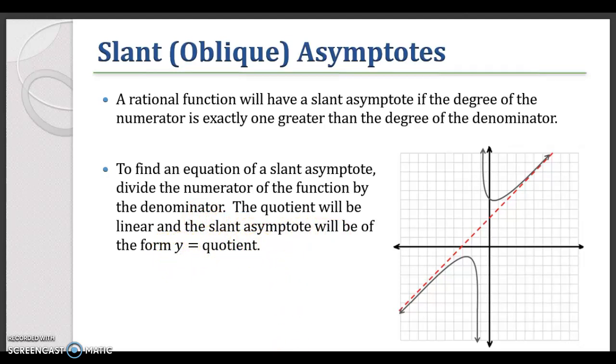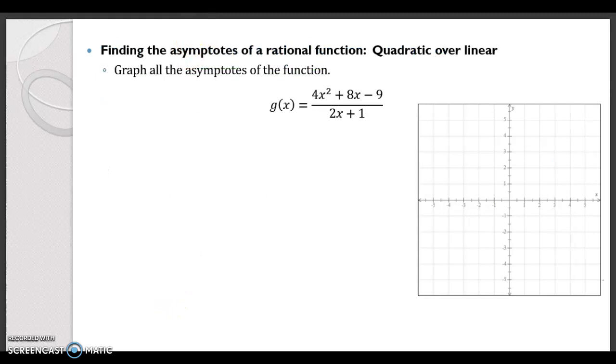So let's go ahead and do this example. So first, let's go ahead and find the vertical. The vertical asymptotes are still going to be wherever the denominator equals zero because we don't want the denominator to equal zero. So we get 2x equals negative 1 divided by 2, x equals negative 1 half. So we're going to have a vertical asymptote at x equals negative 1 half.